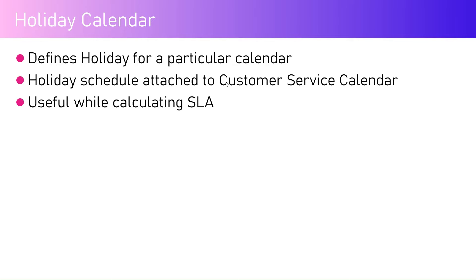For example, if we have an organization called ABC Corp and we define that ABC Corp is going to run for the next five years, we define the calendar from 2023 till 2028. Now if we have another holiday schedule calendar where we define 2023 public holidays, 2024 public holidays through 2028, and attach that calendar to the main calendar, then the effective working days will be the resultant of that.